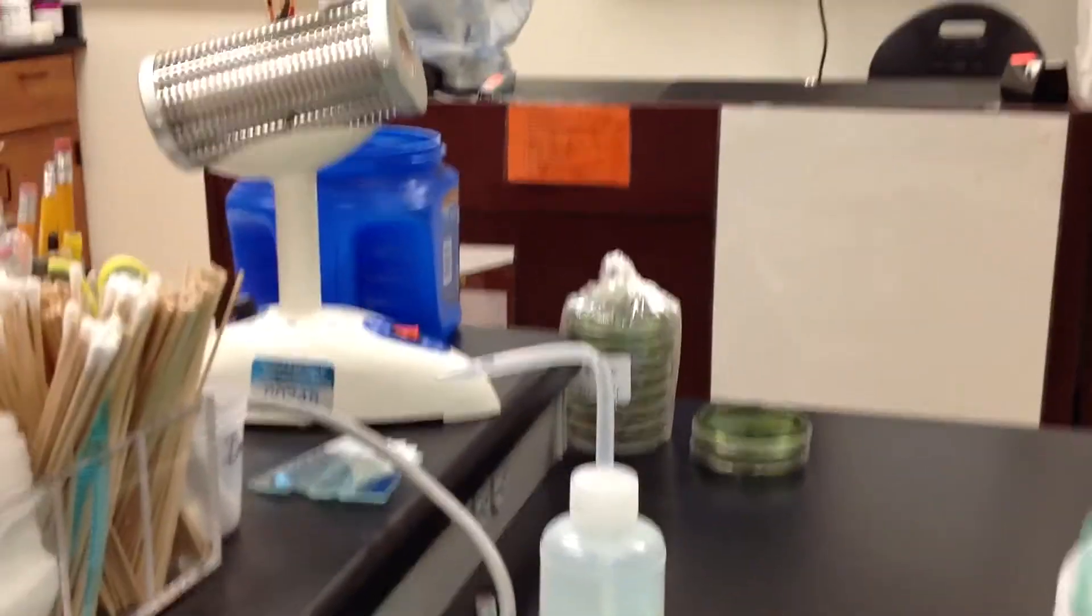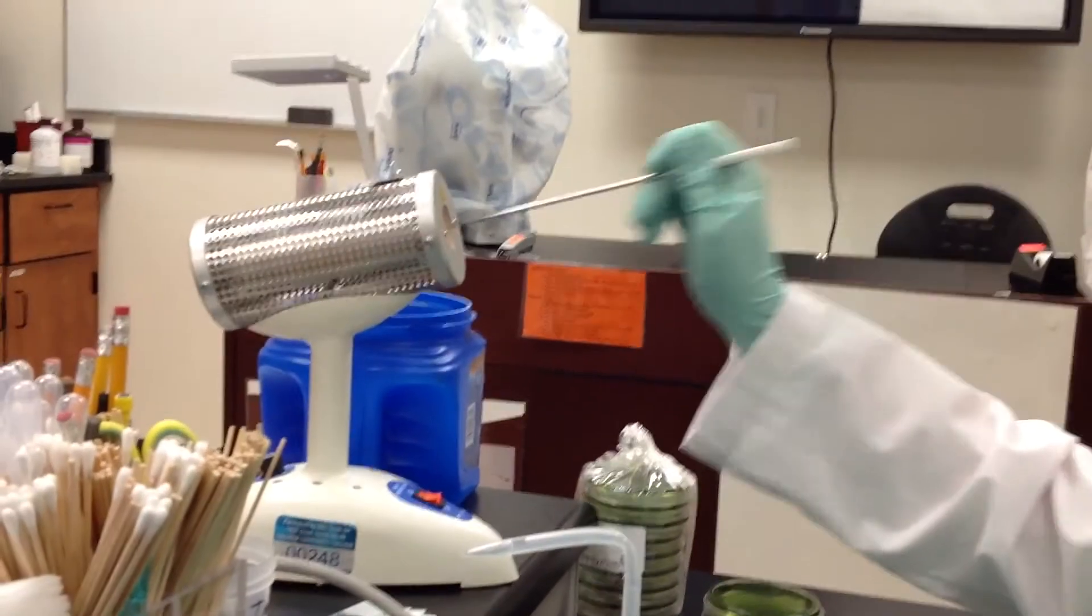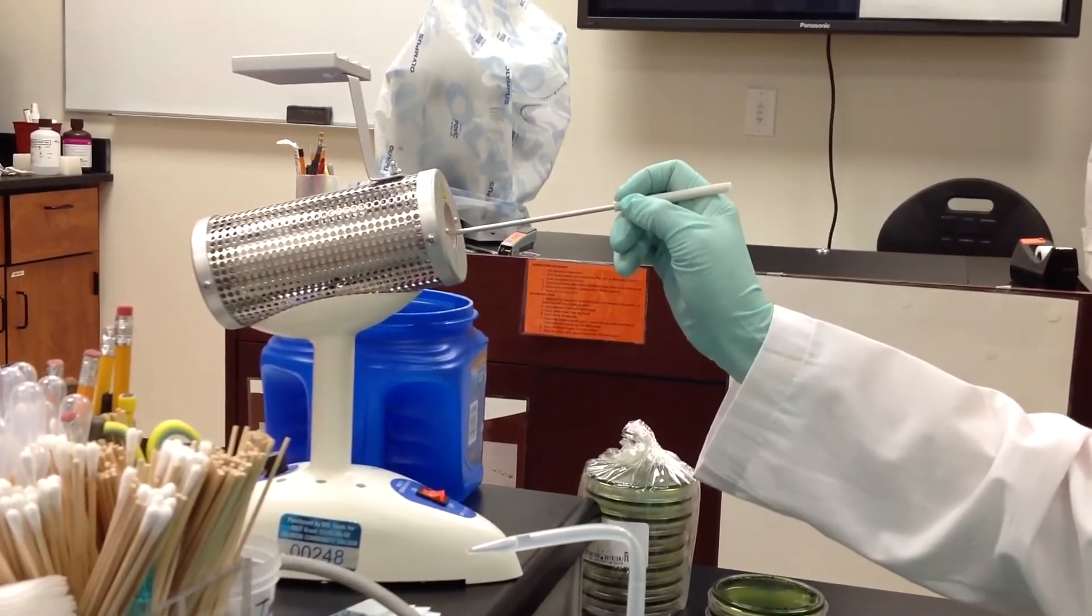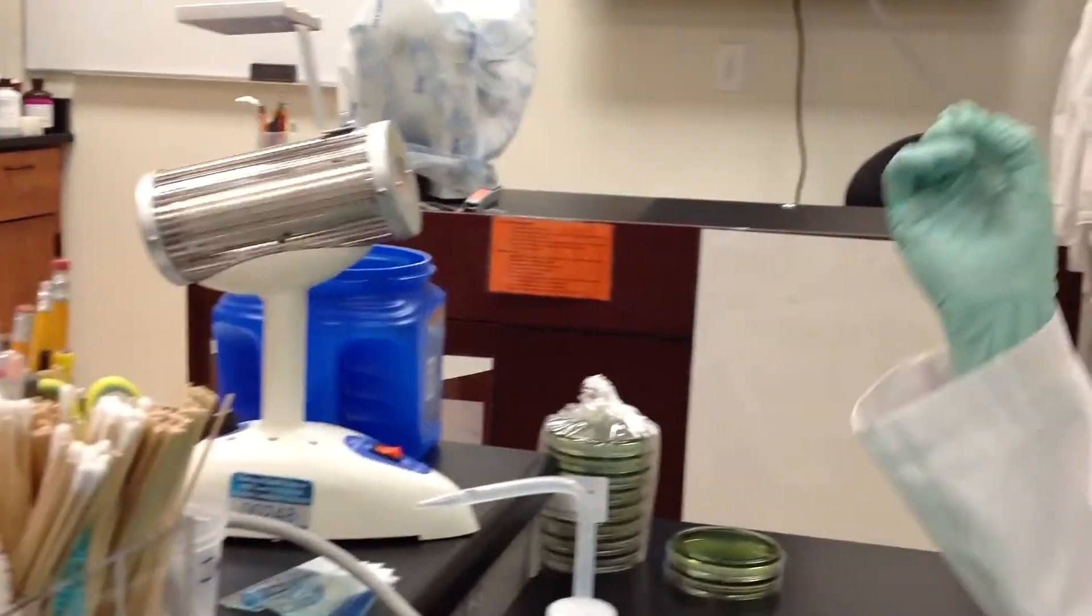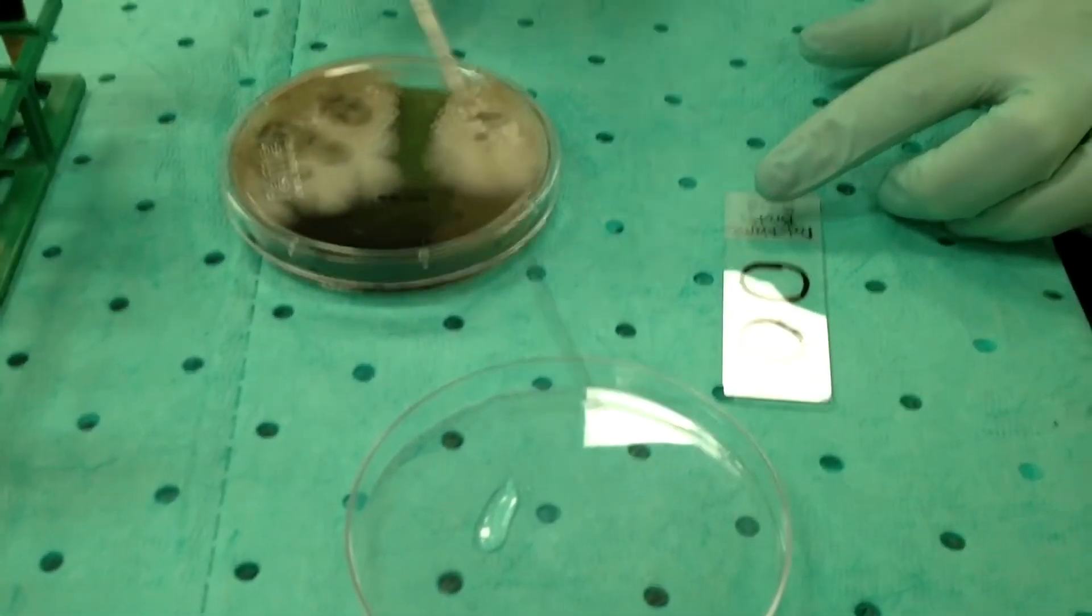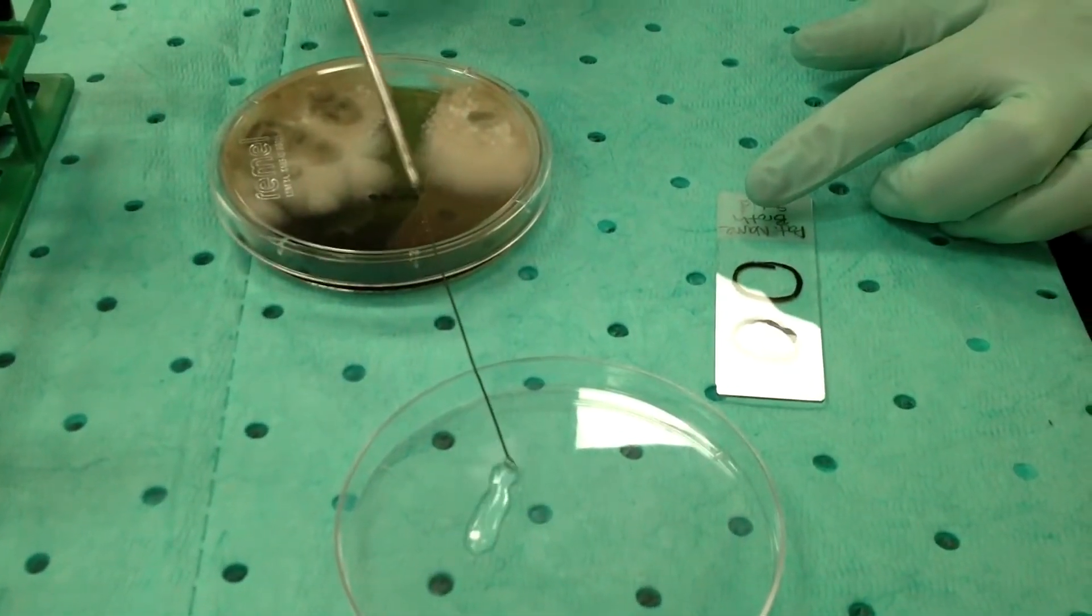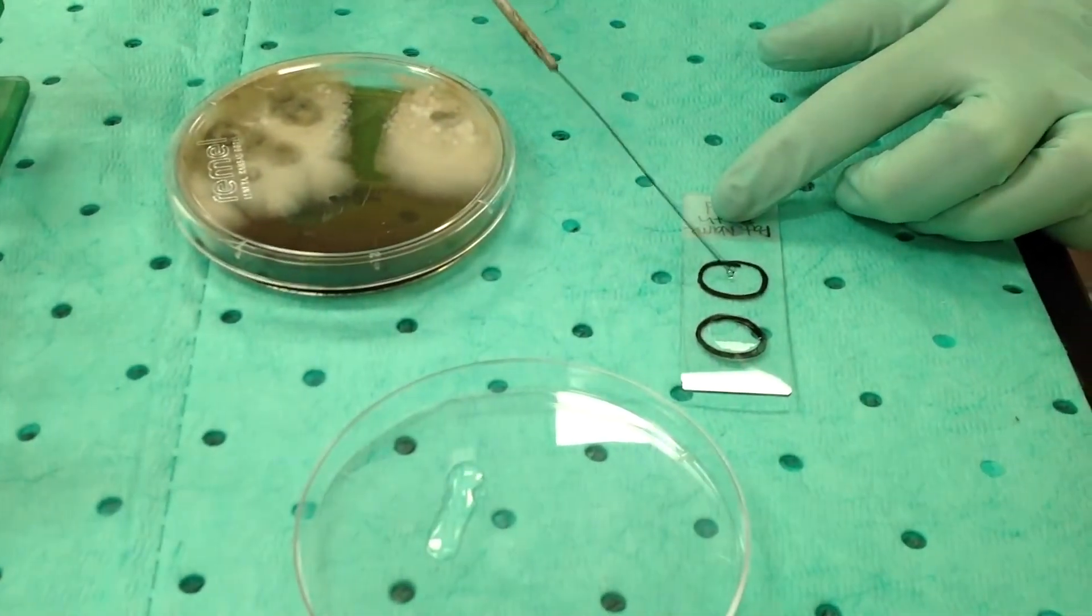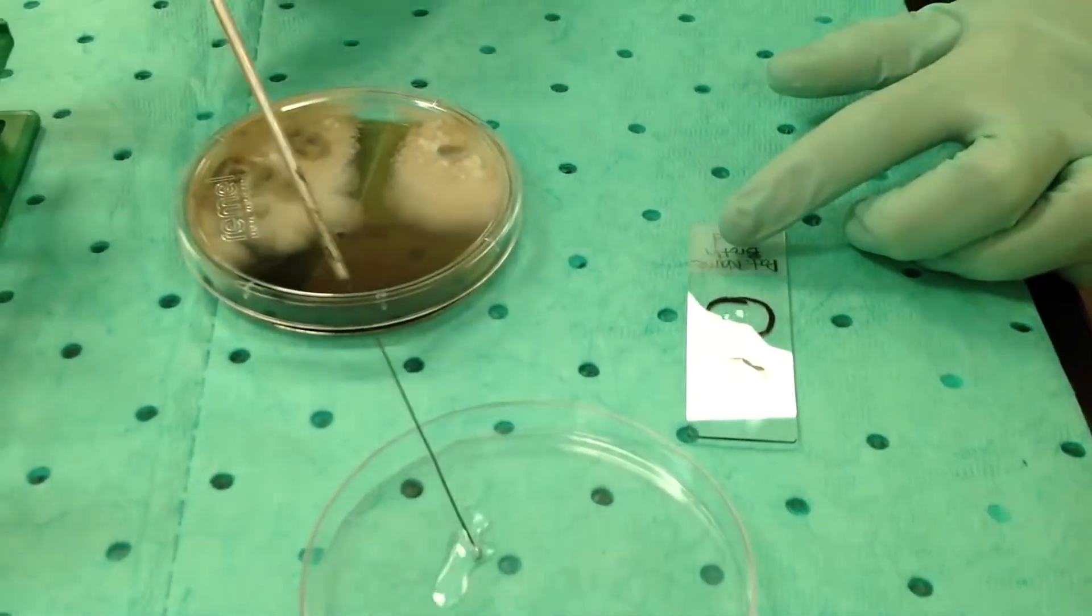First before you do any work with your needle you want to incinerate the tip making sure it gets red hot. Allow it to cool. Once it's cooled you're going to transfer approximately two drops of your water to the correct circle.